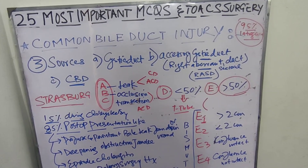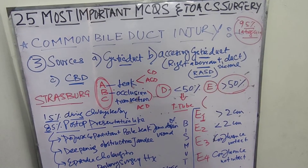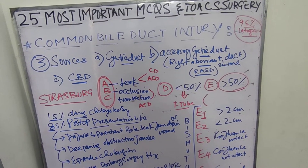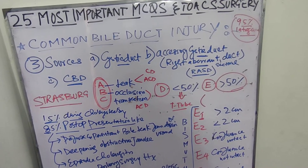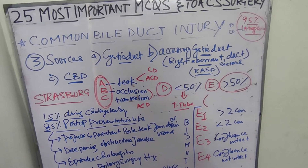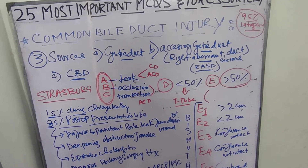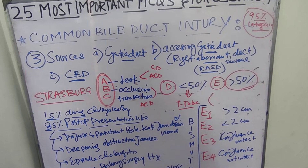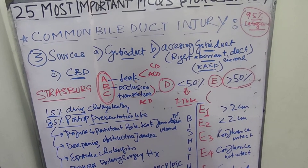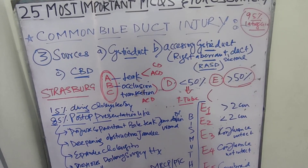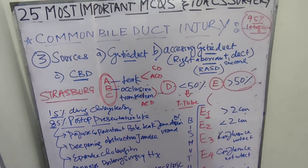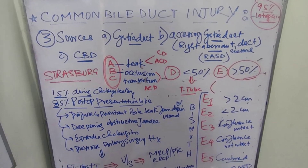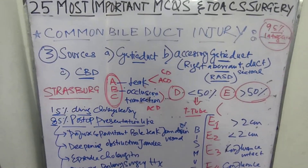In E type injury, more than 50% of the CBD circumference is involved. E is further divided into E1 through E5. When the >50% transection of the common bile duct is more than 2 cm away from the hepatic bifurcation, it is E1; less than 2 cm is E2. When it is at the confluence but the confluence is intact and right and left hepatic ducts are not separated, it is E3. In E4, right and left hepatic ducts are separated from each other. In E5, it is combined CBD and accessory cystic duct injury.